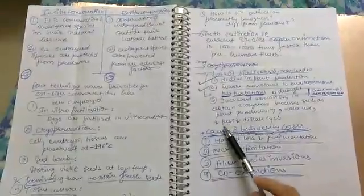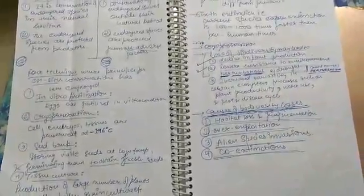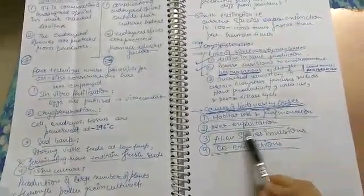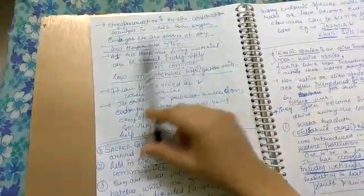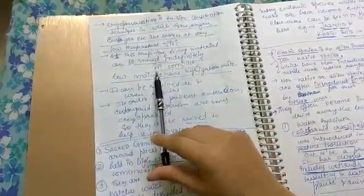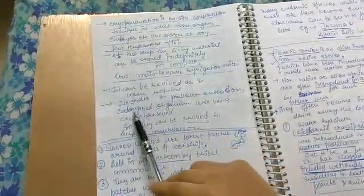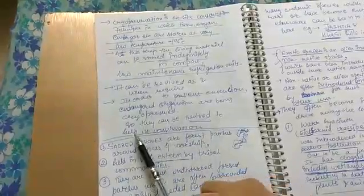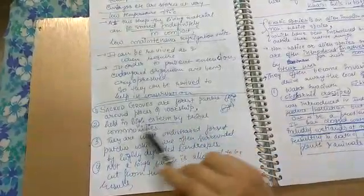Increased variability in certain ecosystem processes such as plant productivity, water use, and pest and disease cycles. Causes of biodiversity loss: habitat loss and fragmentation, over-exploitation, alien species invasion, and co-extinction. Cryopreservation method is ex-situ conservation technique where tissue, organ, and embryo are stored at minus 196 degrees Celsius. At this temperature, living material can be stored indefinitely in compact, low-maintenance units and can be revived as and when required. In order to prevent extinction, endangered organisms are being cryopreserved so they can be revived to help in conservation.